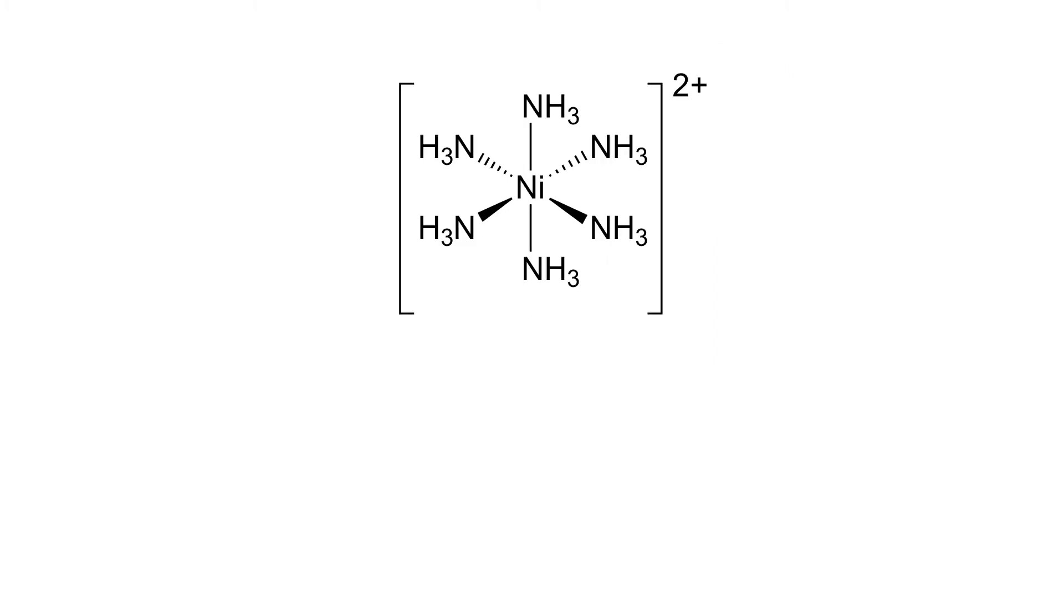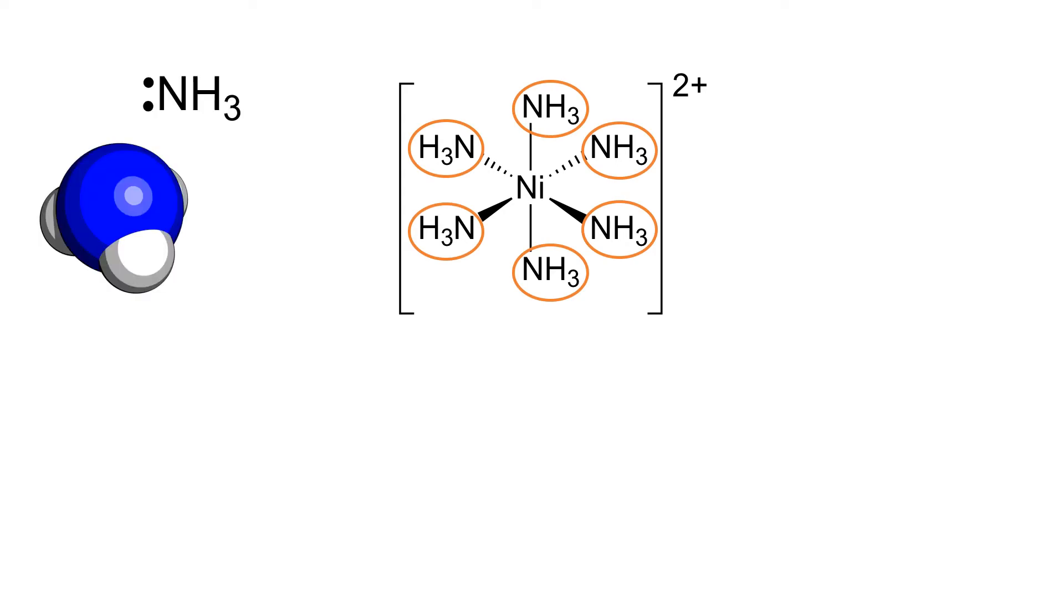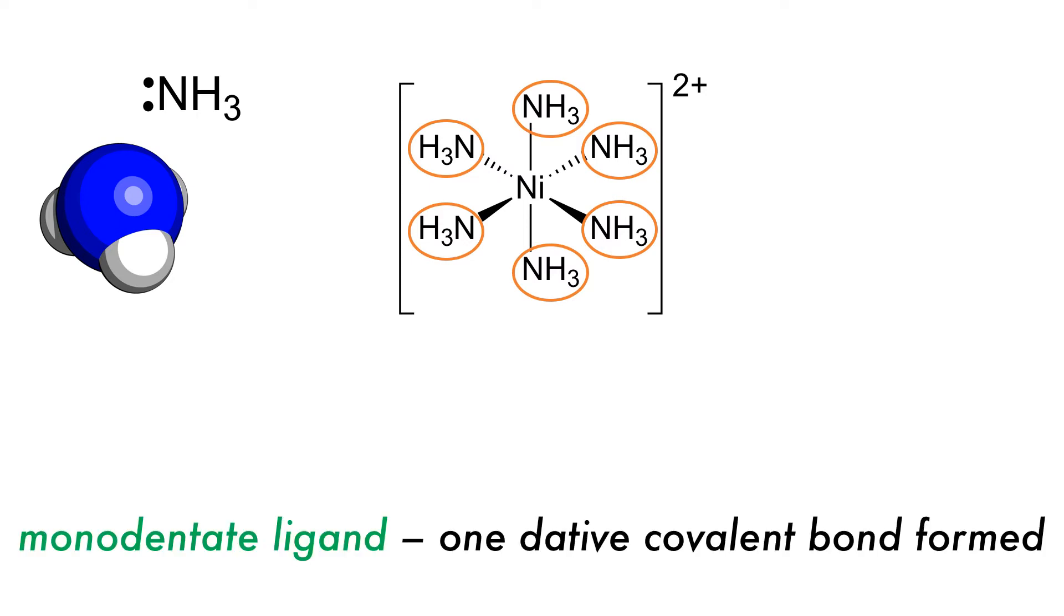The previous complex that we have seen has six ammonia ligands. These are Lewis bases that have one lone pair and so can form one coordinate bond with the central metal ion. We call ligands such as these monodentate. Mono for one and dentate for bite or bond in this case.